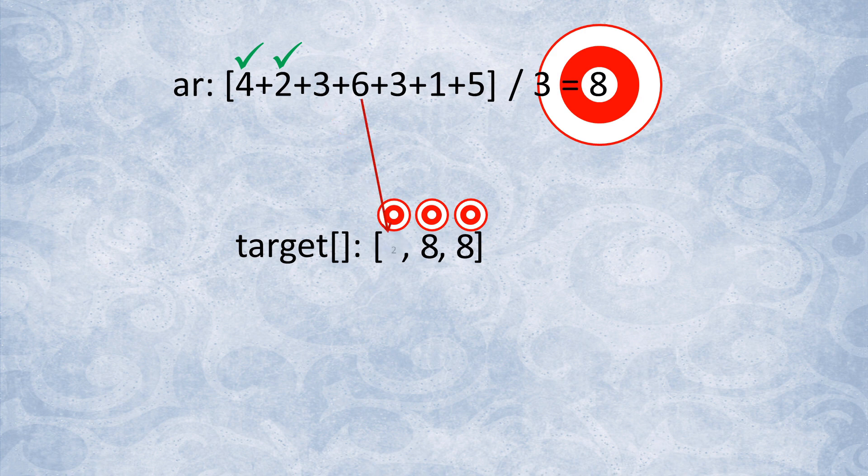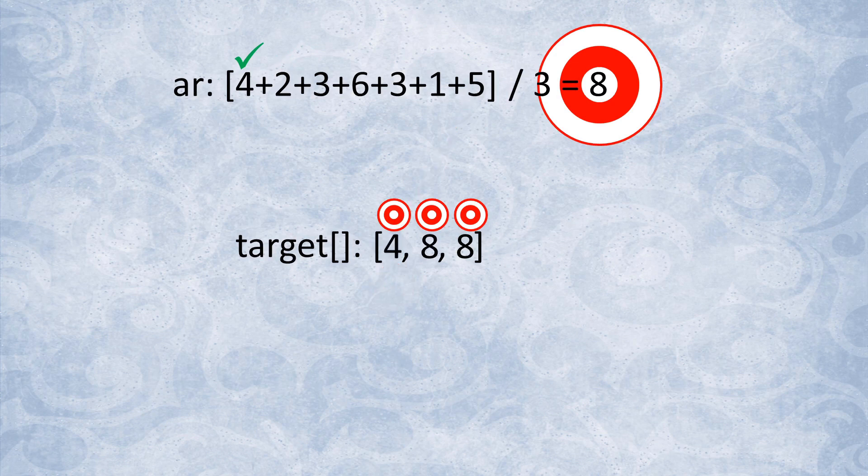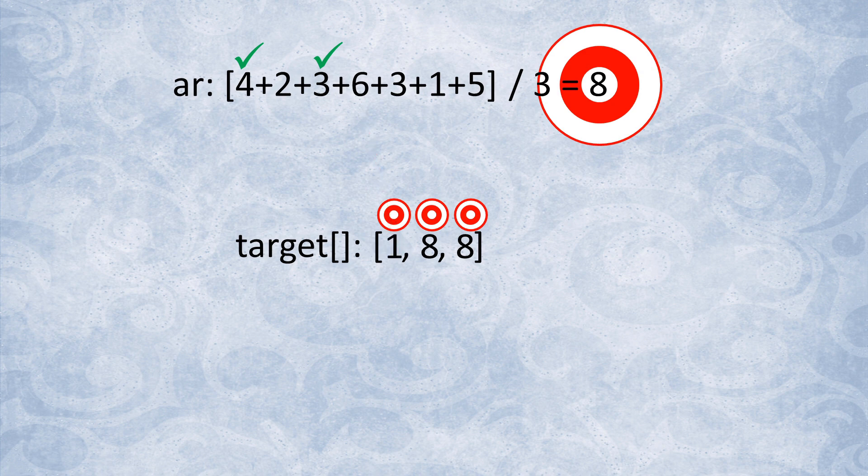If it does not reach 0, we backtrack, undoing the previous operations, and try a different value from the input array. This process is repeated until all of the targets are reduced to 0, or no solution is found having exhausted all of the possible combinations of subsets.